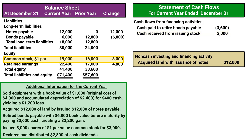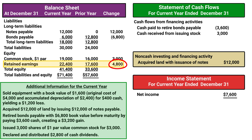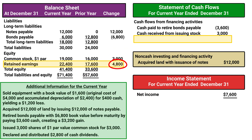Looking back at our equity section, we see that retained earnings increased by $4,800. Retained earnings is increased by net income and decreased by dividends. Looking at our income statement, we see net income is $7,600. And looking at our additional information, the company distributed $2,800 of cash dividends. The $7,600 of net income is already accounted for in the operating section, but the $2,800 needs to be reported. Therefore, we record cash paid for dividends of $2,800 under financing activities.